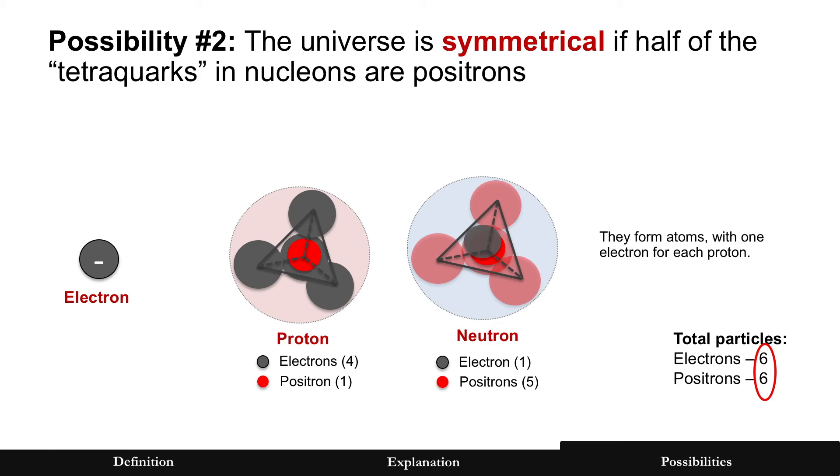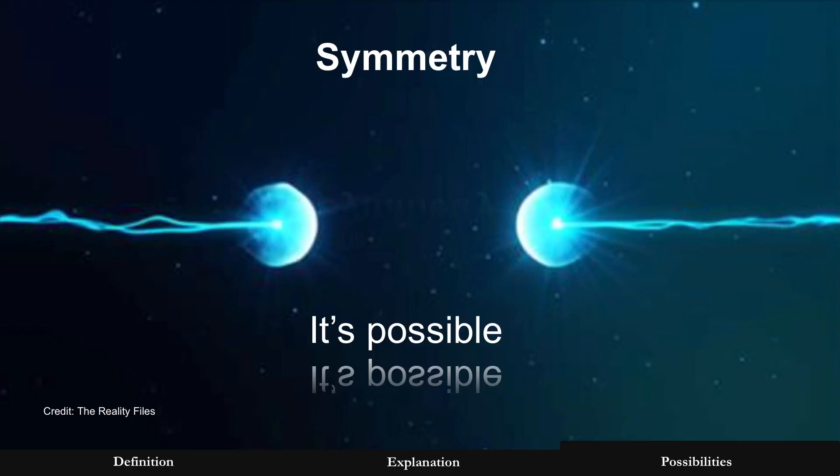That's regular matter that we see, but we just don't realize that positrons, which is antimatter, are kind of hidden there in the nucleon. Again, just a possibility, but that does mean that it's possible that the universe is symmetric. Thank you.